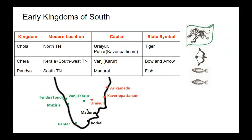The capital of the Chola Kingdom was Urejur, or Puhar, or Kaveripatnam. The capital of the Chera Kingdom was Vanji or Karur. The capital of the Pandya Kingdom was Madurai.